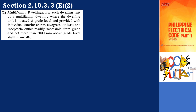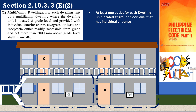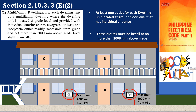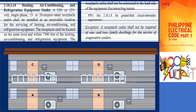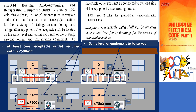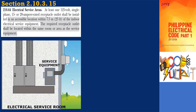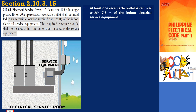Subsection 2.10.3.3e2 requires at least one outlet where the dwelling unit is located at grade level and provided with individual exterior entrance and egress. The height shall be within two meters above floor level. Section 2.10.3.14 states that an outlet rated 250 or 125 volt, single phase, 15 or 20 ampere rated receptacle outlet shall be installed at an accessible location for the servicing of heating, air conditioning, and refrigeration equipment. The receptacle shall be located on the same level and within 7,500 millimeters of the equipment it serves, and shall not be connected to the load side of the equipment disconnecting means. Section 2.10.3.15 requires at least one receptacle outlet within 7.5 meters of the indoor electrical service equipment, and it must be in the same room as the electrical service equipment.